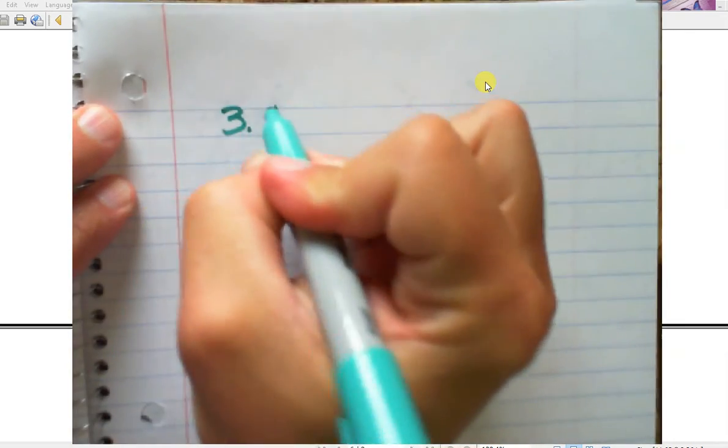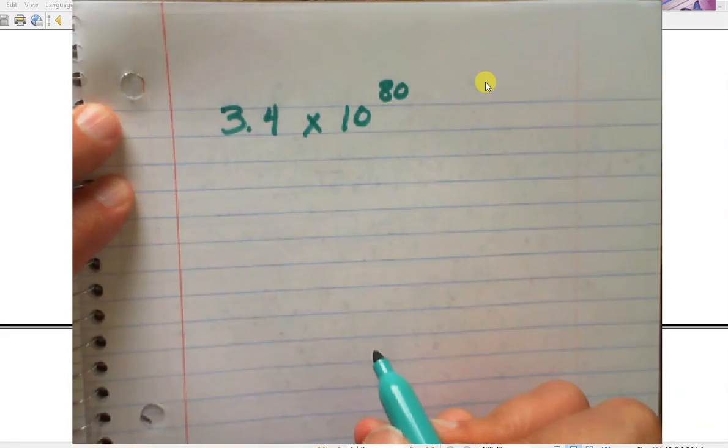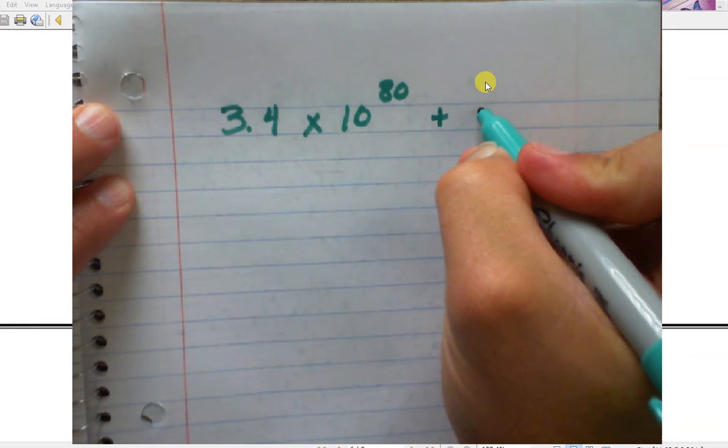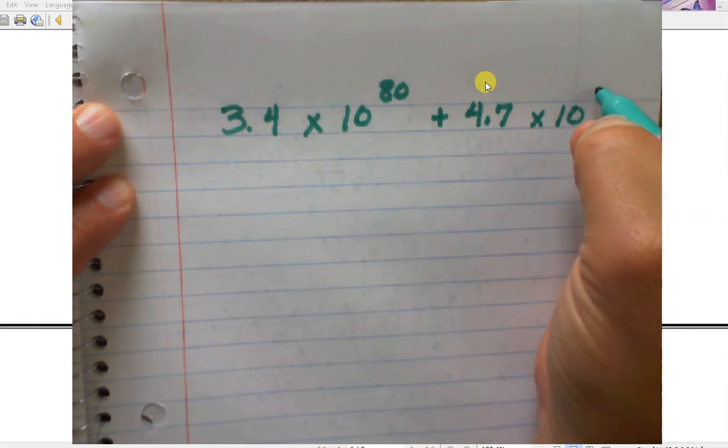Here's another addition problem. So this one would be almost impossible without having this other method. So let's go with 3.4 times 10 to the 80th. Yeah, I know. You're not gonna put out 80 zeros.